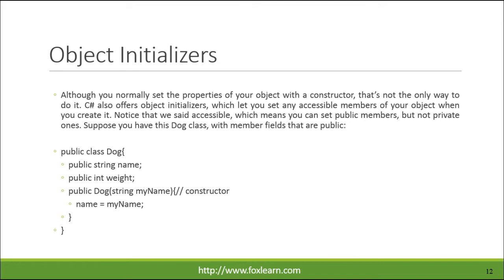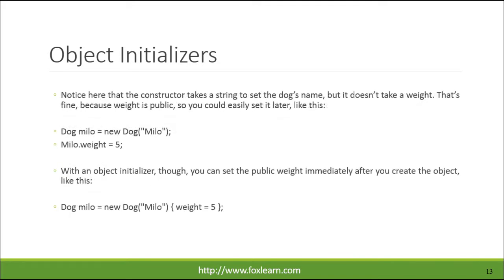Suppose you have a dog class with member fields that are public. The constructor takes a string to set the dog's name, but it doesn't take a weight. That's fine, because weight is public, so you could easily set it later. With an object initializer, you can set the public weight immediately after you create the object.